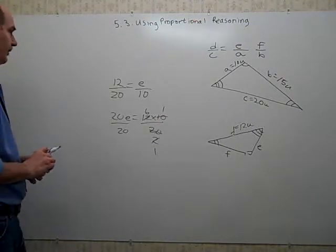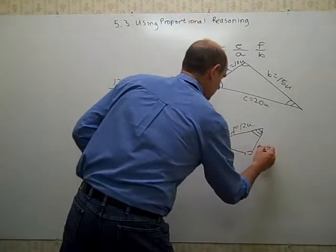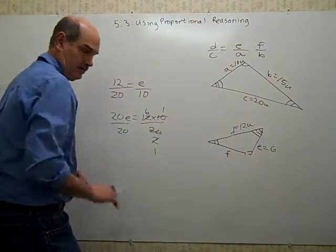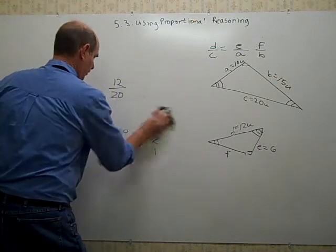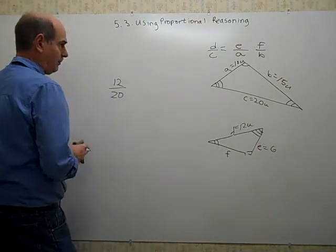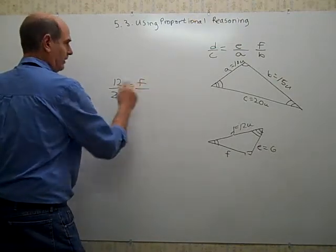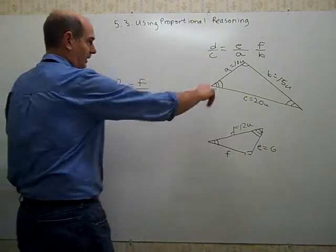Okay, so that's how you can, and then I can figure out what F is. I can use the same proportion, 12 to 20 equals F to B, which is 15.